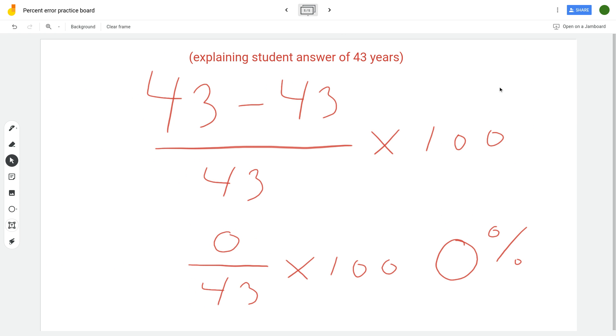And then during one class period today I had one student who guessed 43 years, so I wanted to show you what a zero percent error would look like. So that's 43 minus 43 in the numerator.